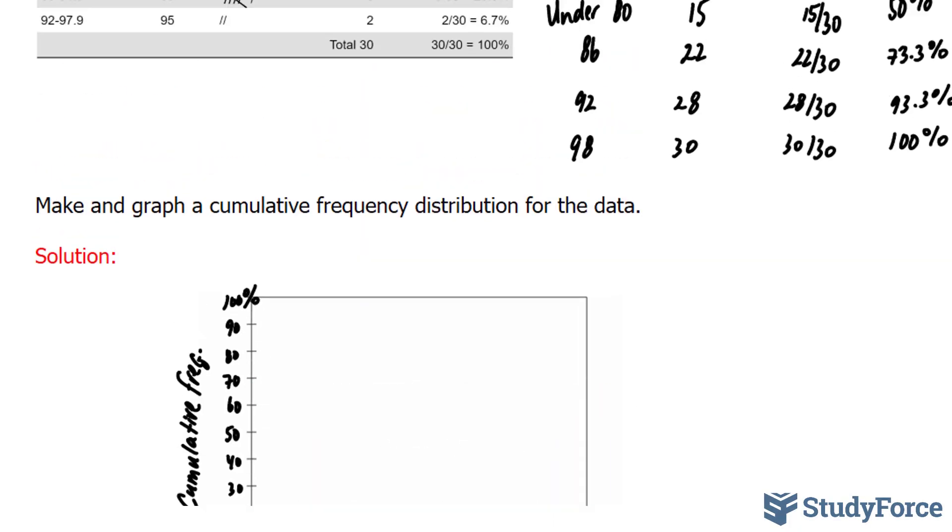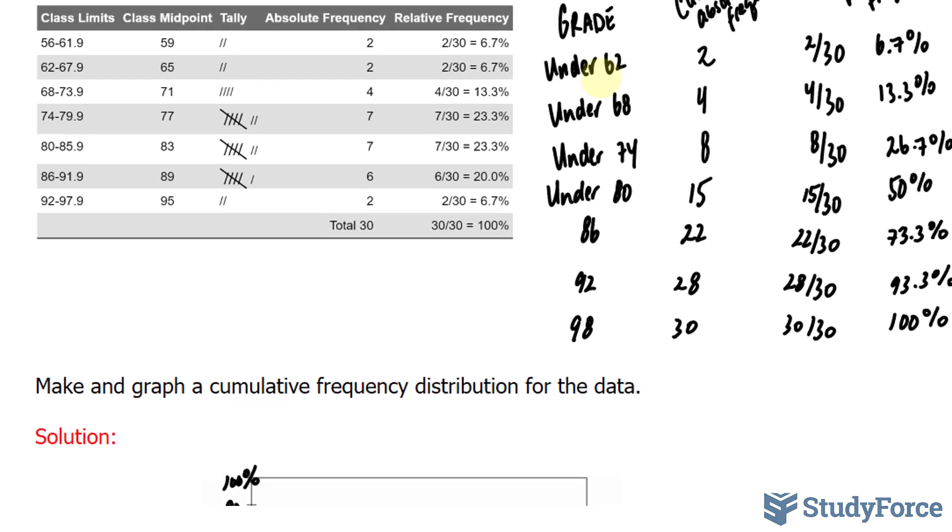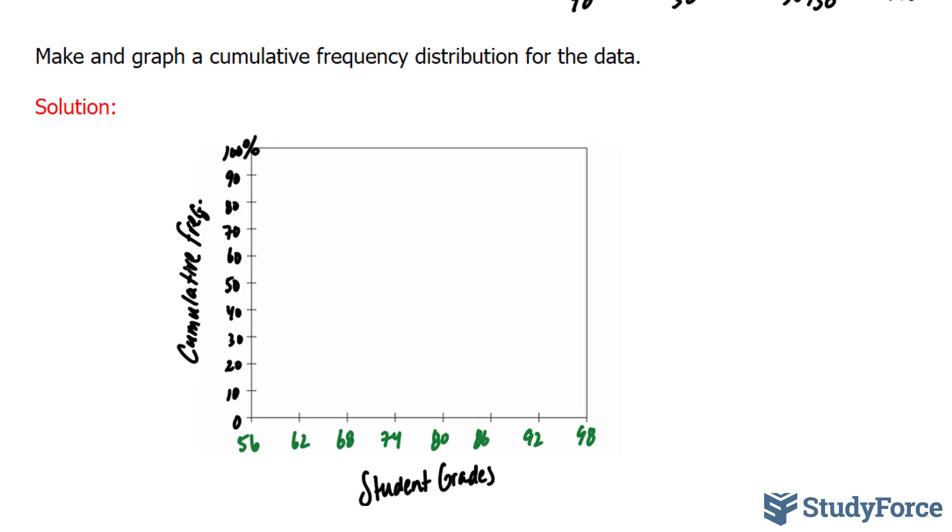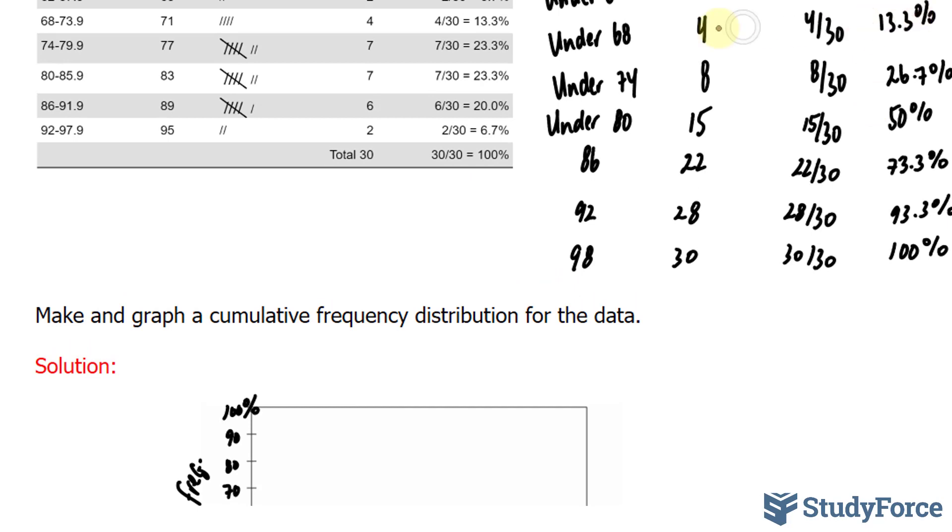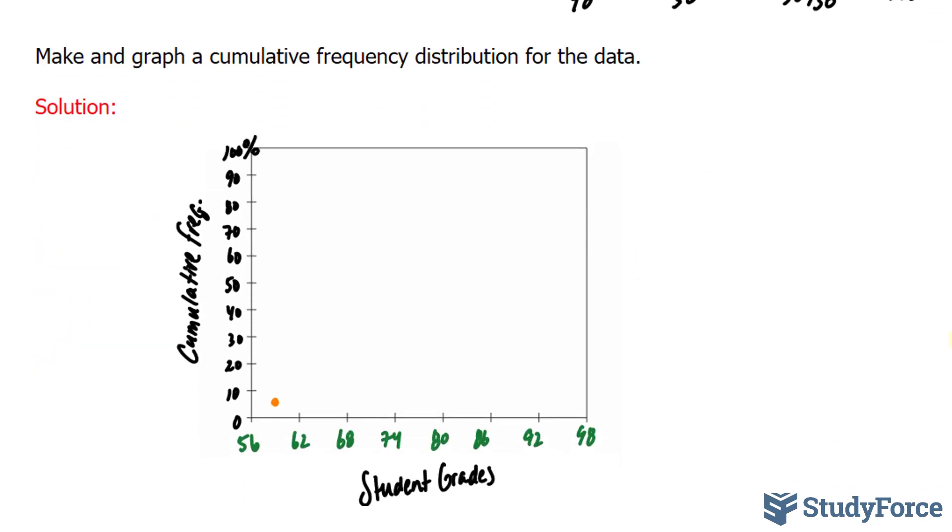The percentage that we got under 62 was 6.7. And that will be in between 56 and 62. So at the midpoint between 56 and 62, we'll plot 6.7%. 6.7% is right here. Under 68 was 13.3%. Notice. So in between 62 and 68, I'll write down 13.3%. I'll plot it right there.